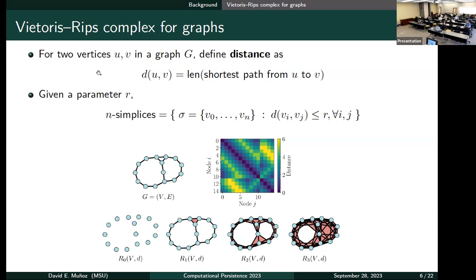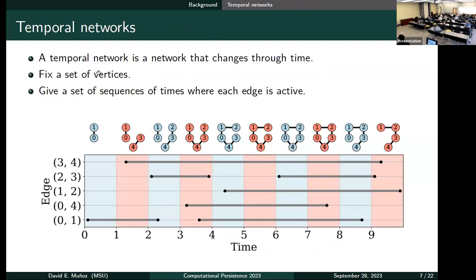Then, for r equal to one, we can only take integer values. For r equal to one, we will have all the edges in the graph, but we will also have some two simplices whenever we have a triangle in the graph. And then, with higher values, we will have more simplices.